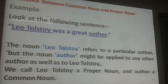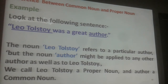Difference between Common Noun and Proper Noun. Look at the sentence: 'Leo Tolstoy was a great author.' The noun Leo Tolstoy refers to a particular author, but the noun author might be applied to any other author as well as to Leo Tolstoy. So we call Leo Tolstoy a proper noun and author a common noun.